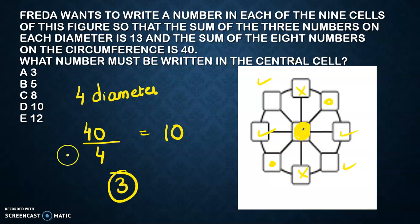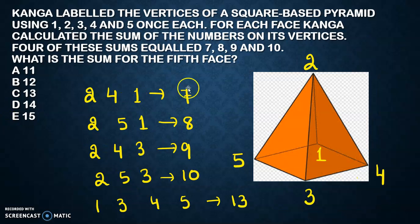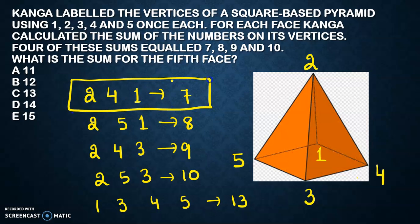Now see this problem. Kanga labeled the vertices of a square base pyramid using 1, 2, 3, 4 and 5, once each. For each face, Kanga calculated the sum of the numbers at its vertices. You have to think - 7 can only be possible with 2, 4, 1. If you have numbers 1, 2, 3, 4, 5, seven can only be done when you have 2, 4, 1 at the vertices.